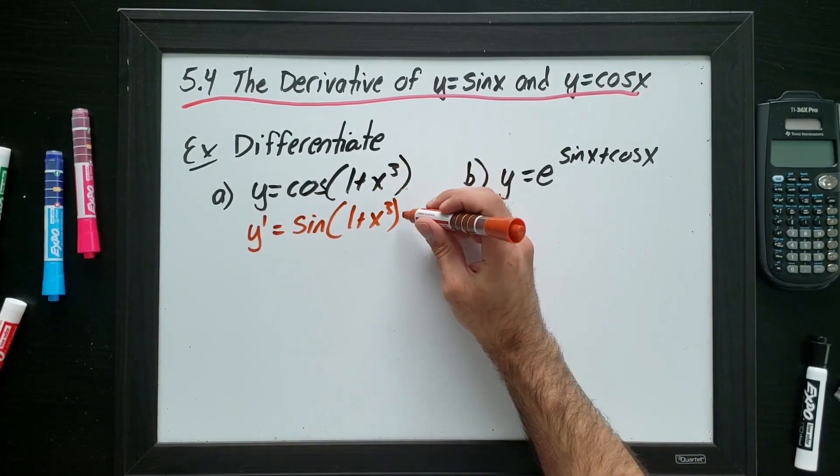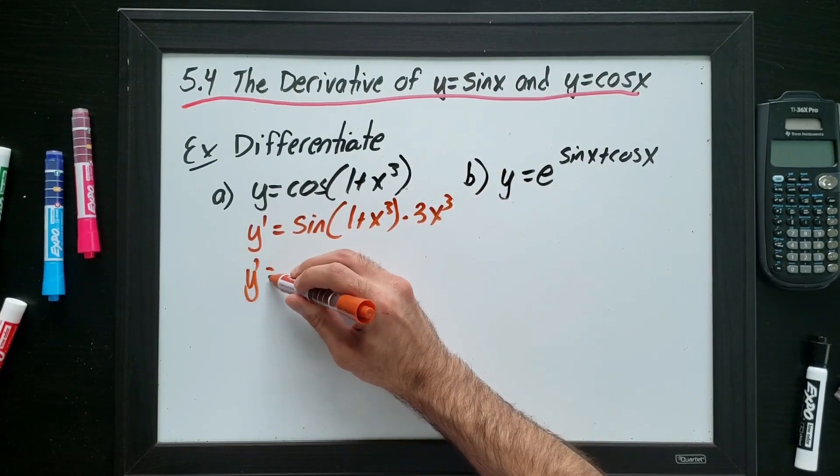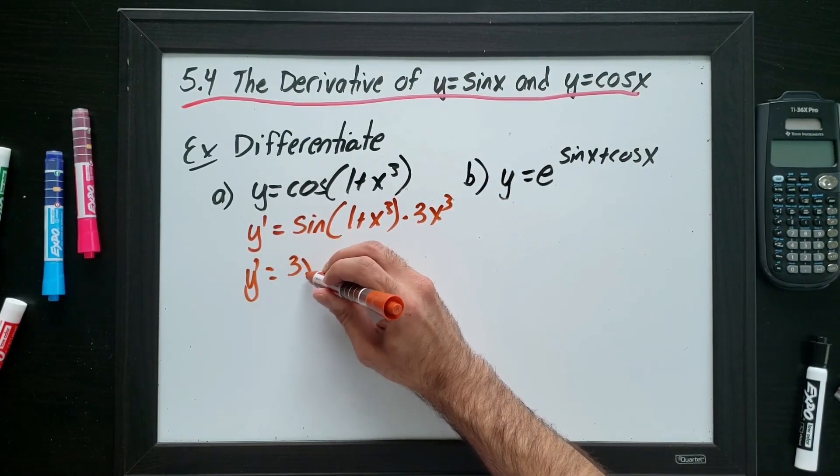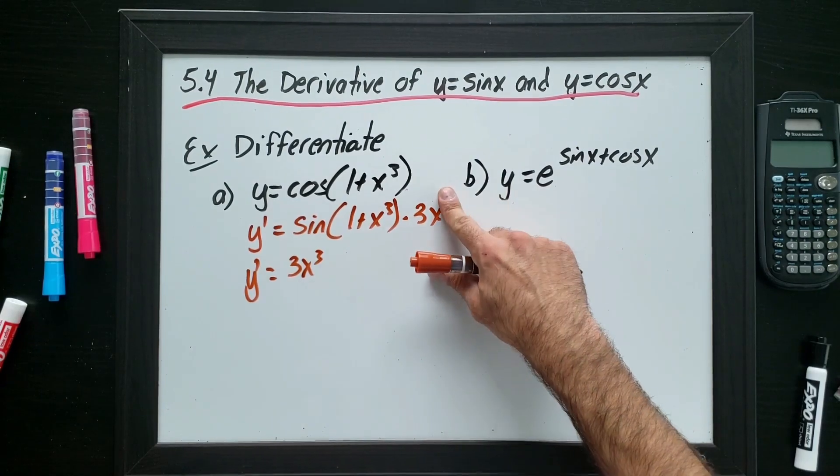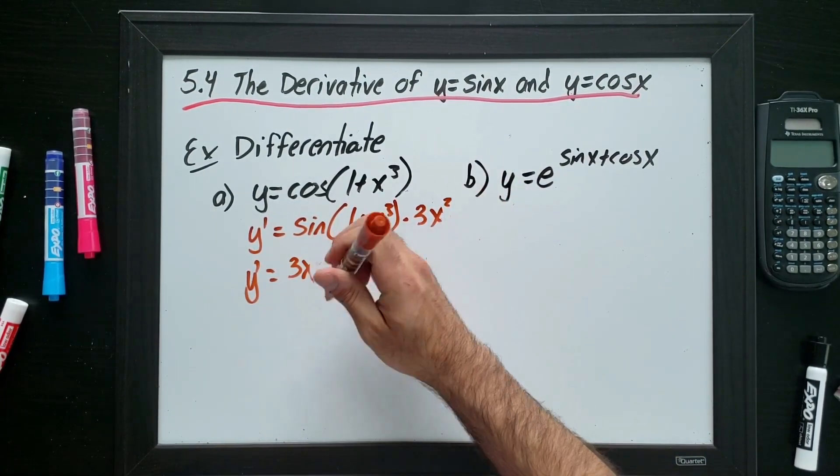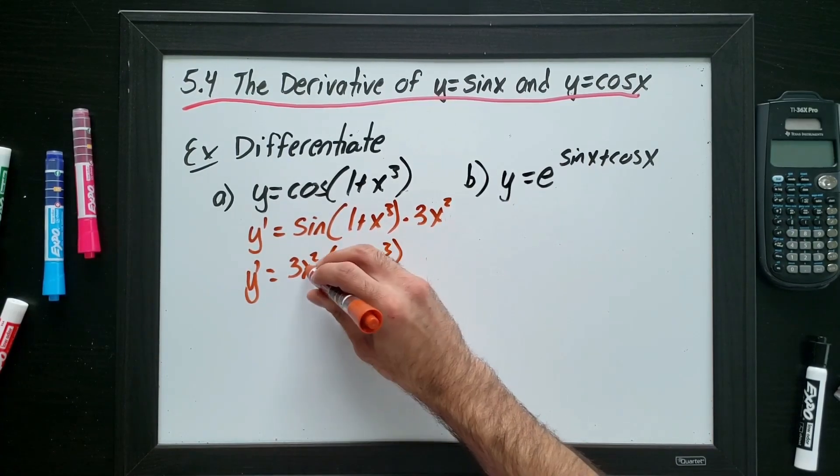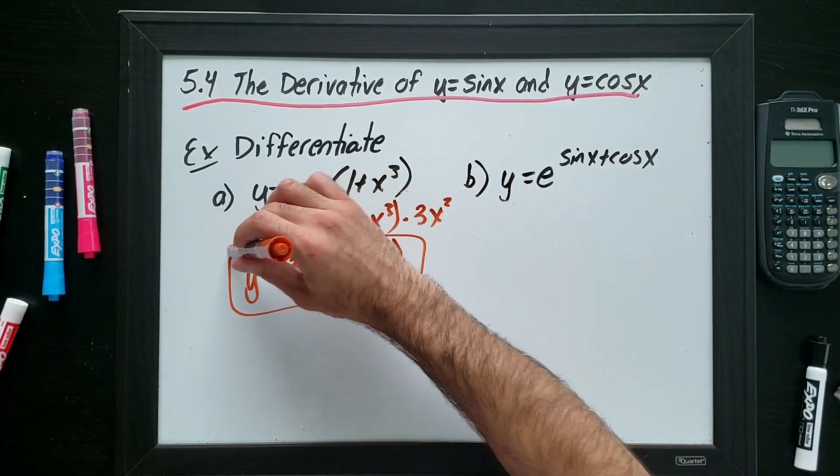Now I have to find the derivative inside the function and multiply. This is just 3x squared. So I can finalize 3x, sorry, squared. Squared 1 plus x, 3. And this is done.